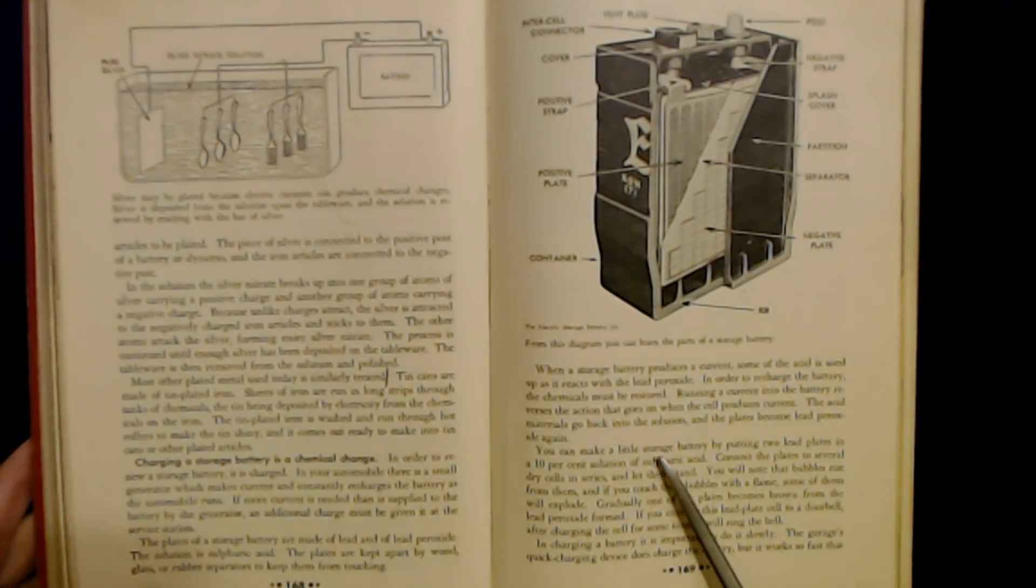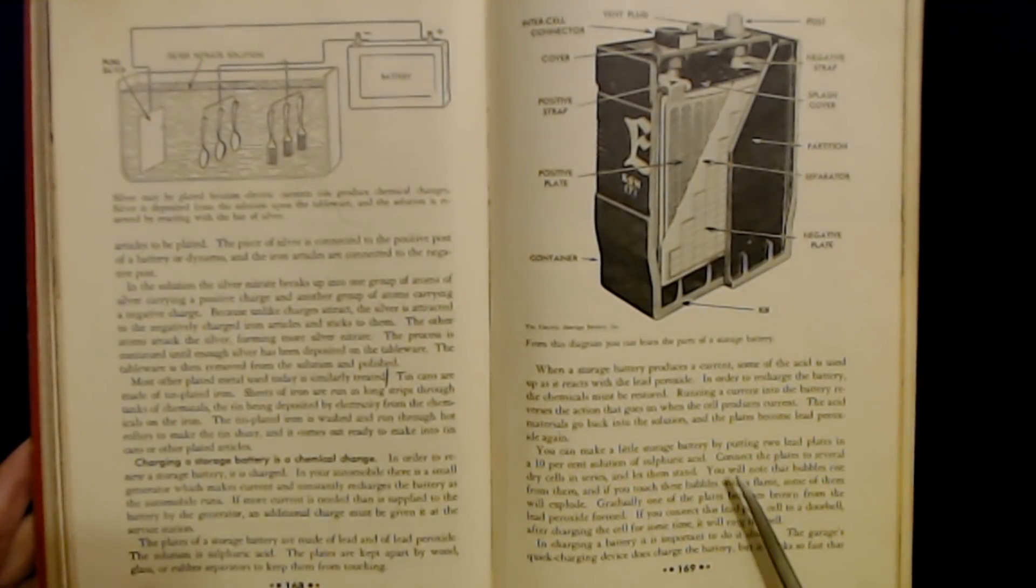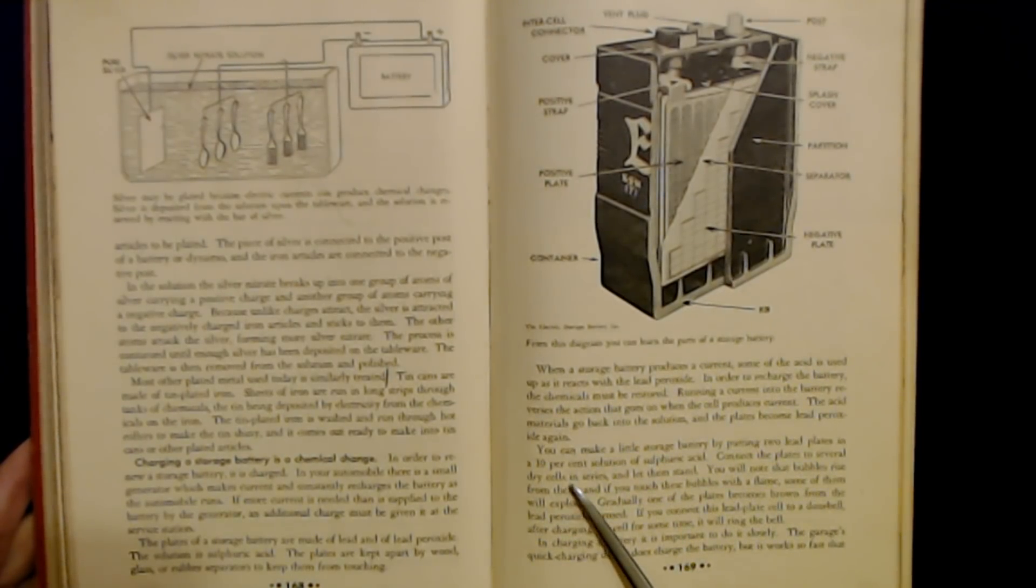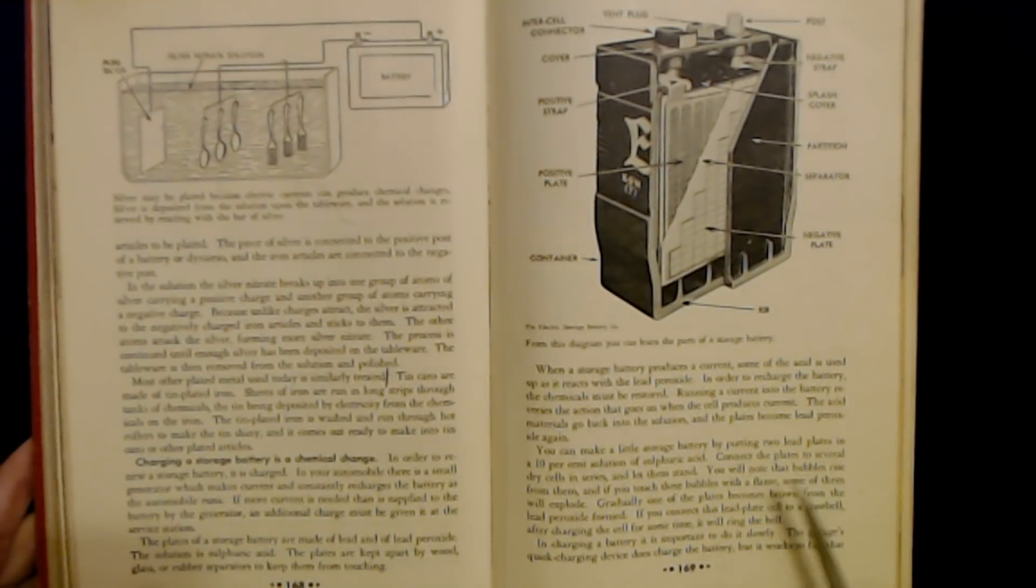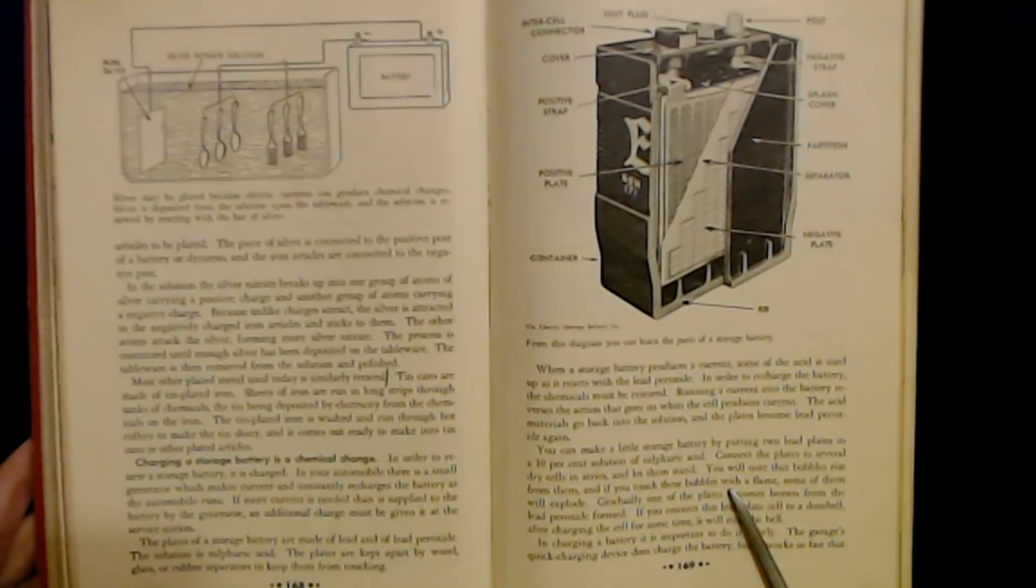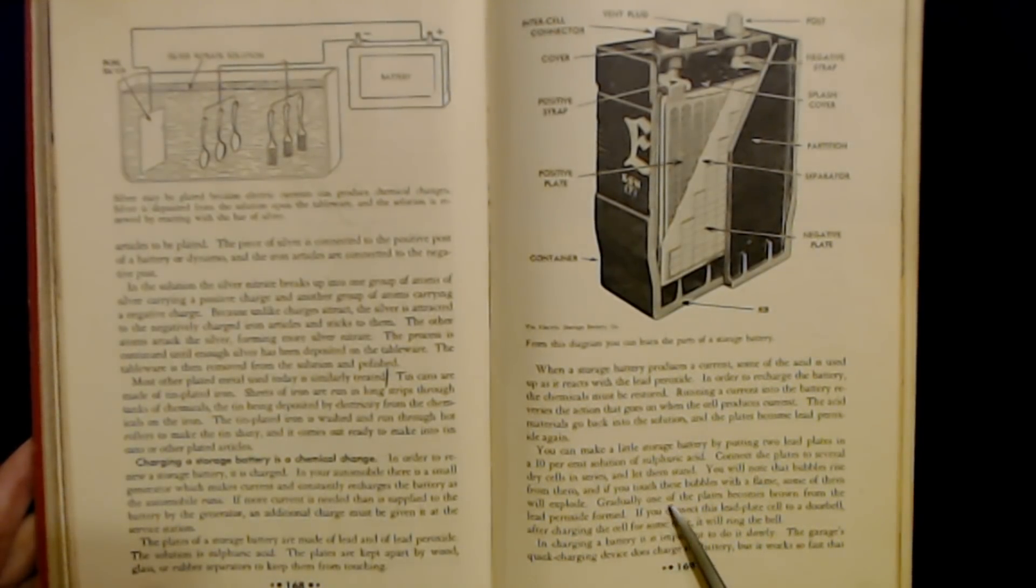You can make a little storage battery by putting two lead plates in a 10% solution of sulfuric acid. Connect the plates to several dry cells in series and let them stand. You will note that bubbles rise from them and if you touch these bubbles with a flame, some of them will explode. Gradually, one of the plates becomes brown from the lead peroxide formed. If you connect this lead plate cell to a doorbell, after charging the cell for some time, it will ring the bell.